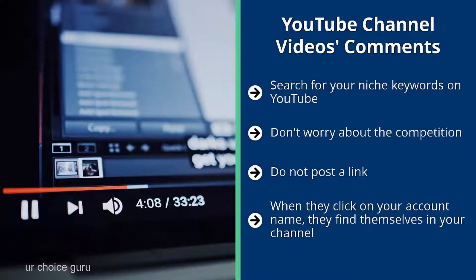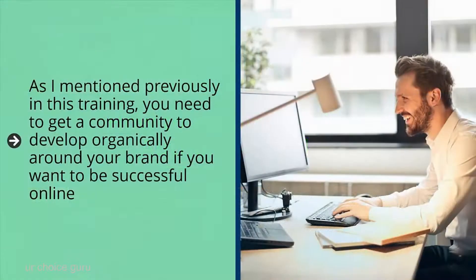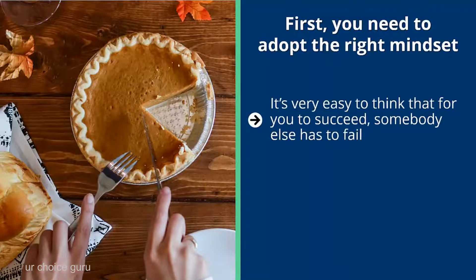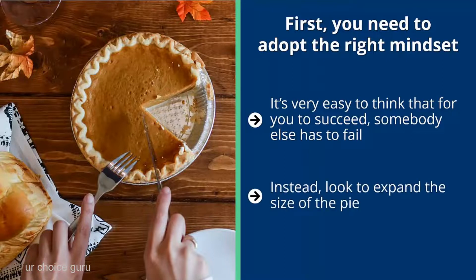How to become a niche authority quickly: you need to get a community to develop organically around your brand. You need to develop authority. First, adopt the right mindset. It's easy to think that for you to succeed somebody else has to fail — to see online success as a pie where someone's slice must shrink for yours to grow. Get rid of that mindset. Instead, look to expand the size of the pie or create a rising tide that lifts all boats. It's all about creating a win-win solution; for you to win, somebody doesn't necessarily have to lose.